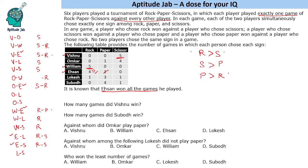Now let's look at Omkar, who has one paper and four scissors. Omkar cannot play scissors against Vishnu, since no two players chose the same sign — so Omkar must play paper against Vishnu. Scissors versus paper means scissors wins. The remaining four games for Omkar are all scissors, and rock versus scissors means rock wins in those games.